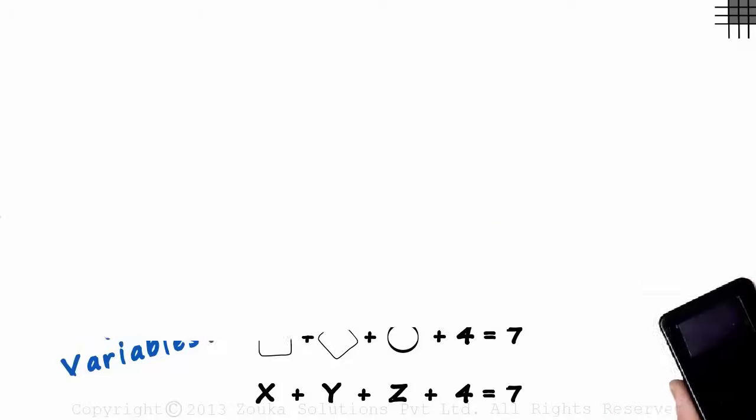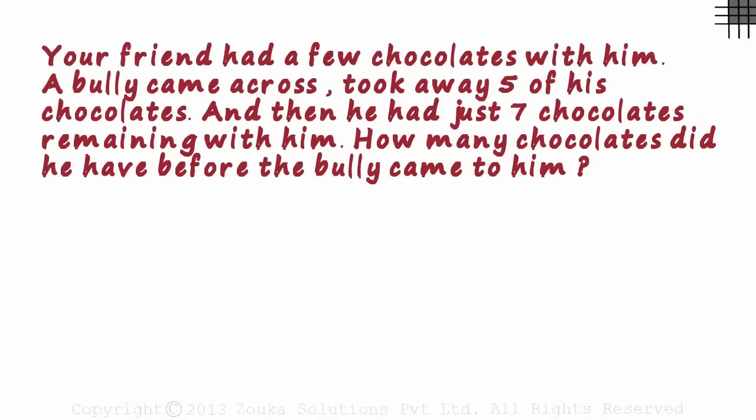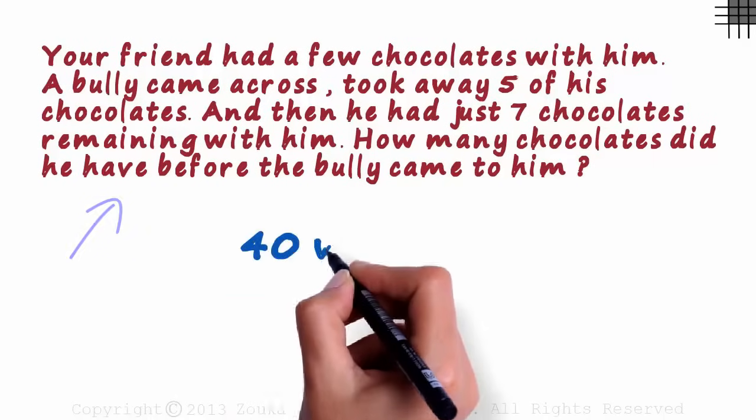Read this short story and the question that follows. Your friend had a few chocolates with him. A bully came across, took away five of his chocolates. And then he had just seven chocolates remaining with him. How many chocolates did he have before the bully came to him? This question has 40 words.